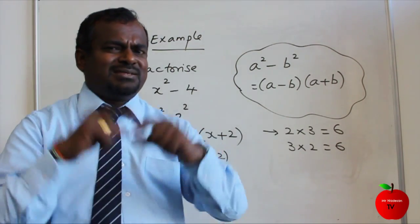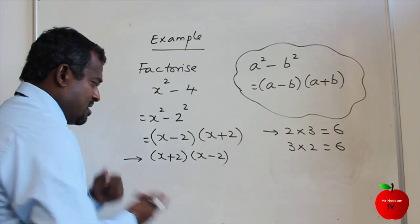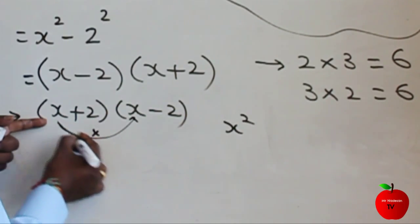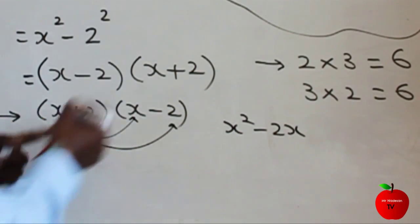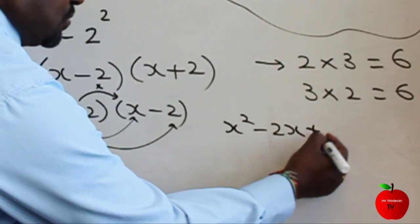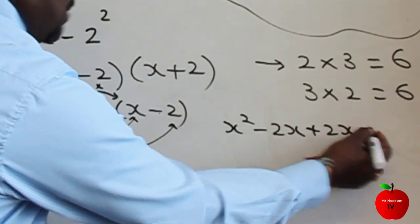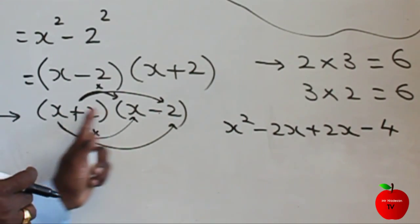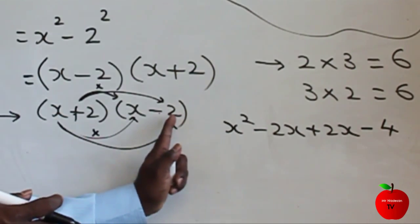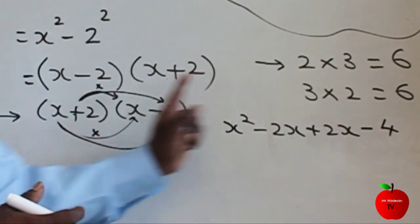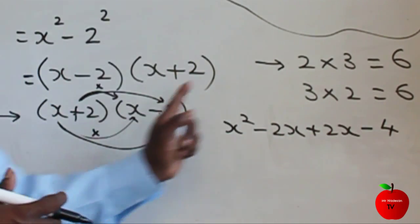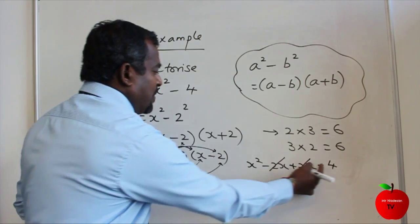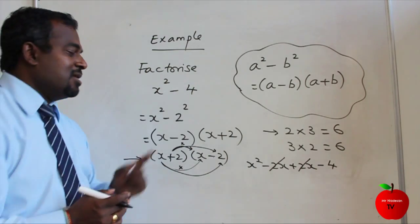You can double-check your answer using expand and simplify on double brackets. Expanding x minus 2 times x plus 2: x times x gives x squared; x times plus 2 gives plus 2x; minus 2 times x gives minus 2x; and minus 2 times plus 2 gives minus 4. The plus 2x and minus 2x cancel, leaving x squared minus 4 — which is what we started with, so we've done it right.